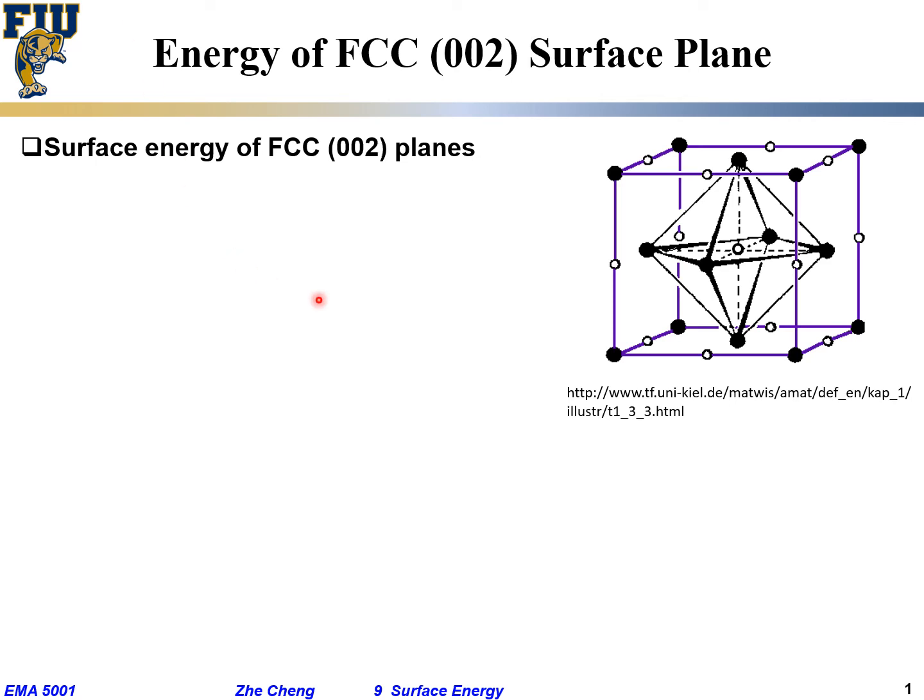So we finished estimating the surface energy for the so-called (111) plane in a FCC structure. Now let's look at a different surface. What if the single crystal is exposing another crystalline surface plane? We are looking at what crystal structure? Still FCC, but now let's look at the so-called (002) plane.